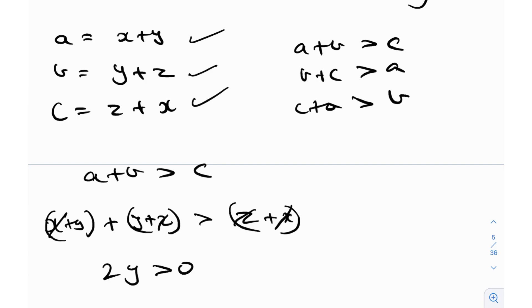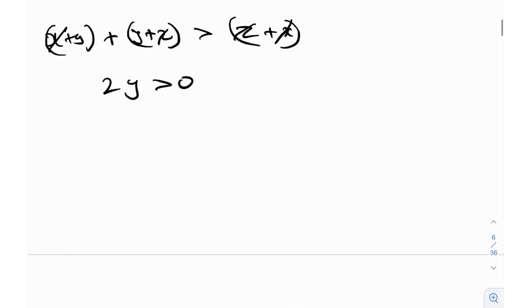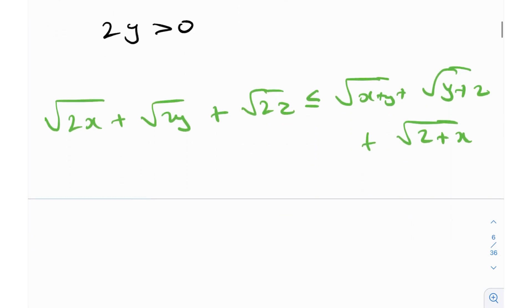Okay, great. So now what I'm going to do is I'm just going to use this substitution and plug it into our original inequality. And let's just see what we get. So when you just make the substitution, you will obtain root two X plus root two Y plus root two Z is less than or equal to root X plus Y plus root Y plus Z plus root Z plus X, which is great because now you kind of get the idea that it's becoming a little bit easier. It's becoming a little bit more symmetric.